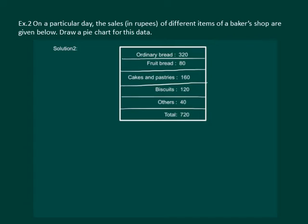Let us read the next question. On a particular day, the sales in rupees of different items of a baker shop are given in the table. Draw a pie chart for this data. To draw a pie chart from this data, we first need to convert these figures into fractions, and then from fractions we have to convert them into angles. So let us first convert to fractions.